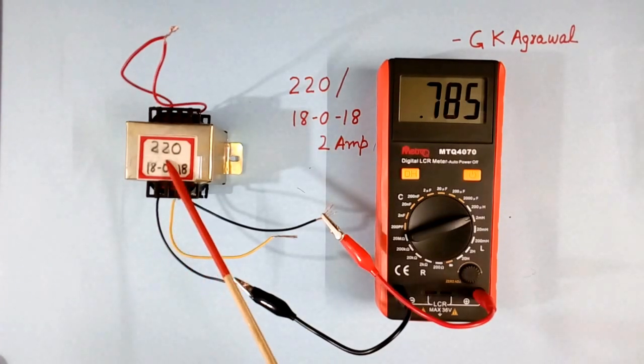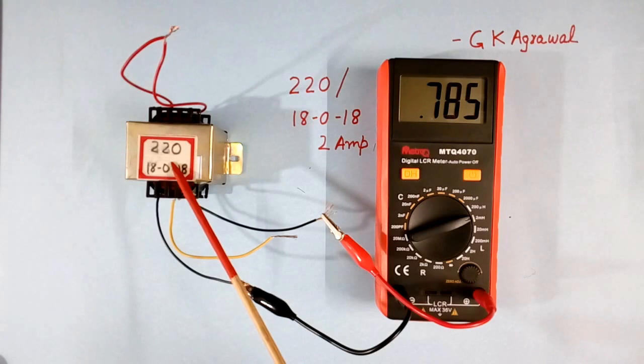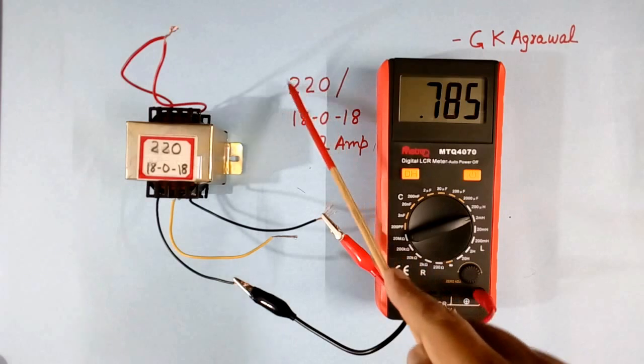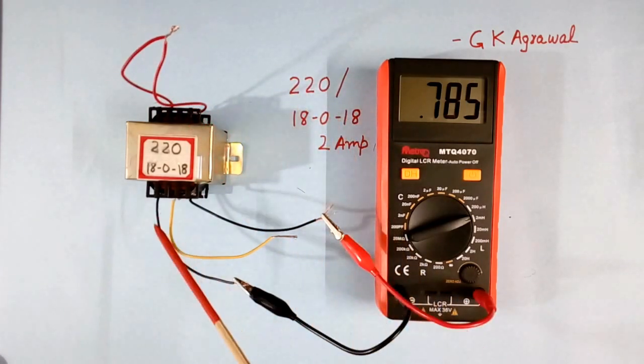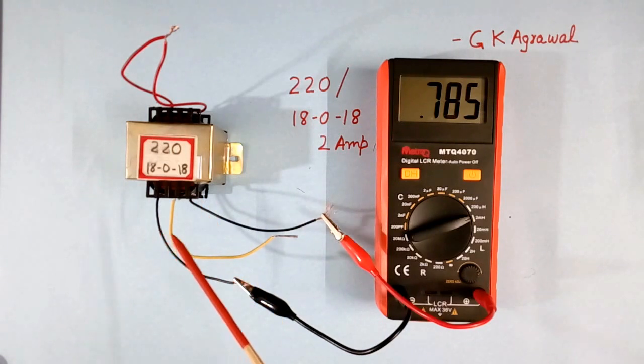Now instead of this transformer, if we have any other transformer, that can be used as an inductor. The only thing we have to do is short the high voltage side winding, and the low voltage side winding can be used as an inductor.